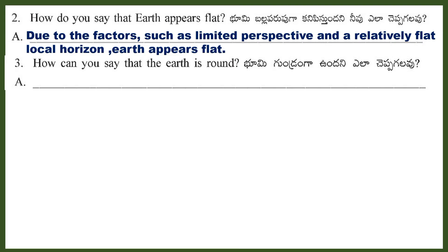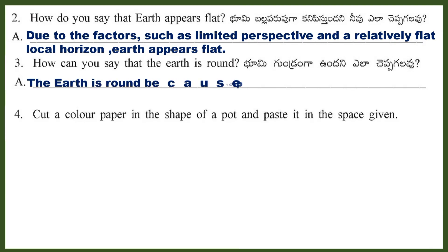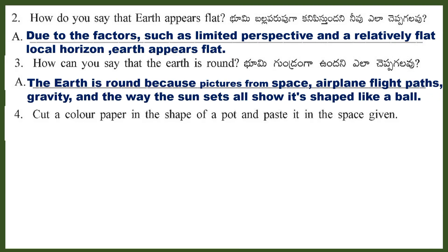Question 3: How can you say that the Earth is round? Answer: The Earth is round because pictures from space, airplane flight paths, gravity, and the way the sun sets all show it's shaped like a ball.